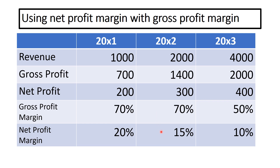Looking at them together, we can see that overheads are now taking 55% of the business's costs. In 20x3, the gross profit margin has dropped down 20% to 50p in the pound, meaning for some reason we have spent 20% more on cost of goods sold — that would be cause for investigation. At the same time, the overhead management has actually improved, because the difference between the two margins is 40p in the pound, which is better than in year one and year two. So when using net profit margin, it's often good to look at it alongside the gross profit margin, as it gives real clues about what's happening in the business.